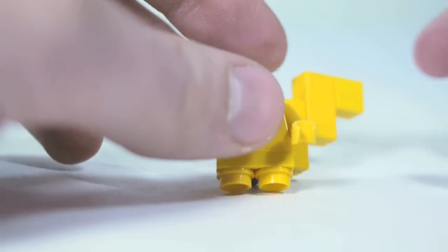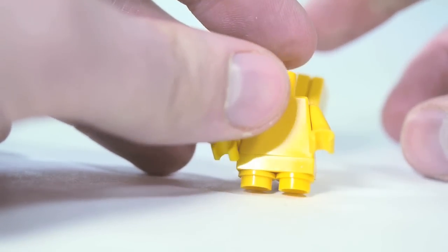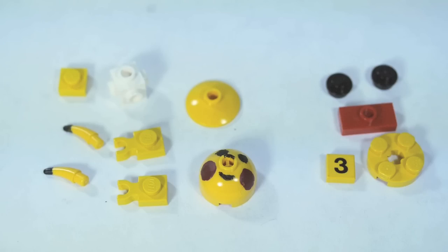Pikachu will start falling backwards at this point, but that's okay. These are the pieces you'll need for Pikachu's head. The pieces set off to the right are a different way to build the head if you don't want to paint it.